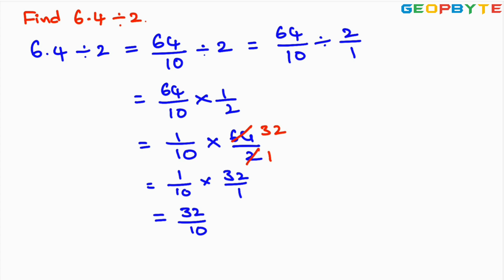Now we are dividing 32 by 10. Whenever we divide any number by 10, we need to move the decimal point from right to left by one place. So here, dividing by 10, we move one place and place the decimal point, giving us 3.2. The result of 6.4 divided by 2 is 3.2.